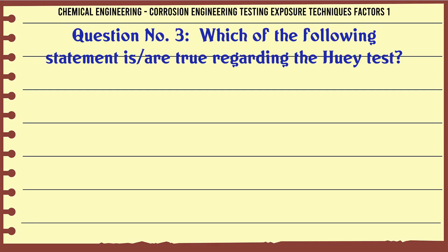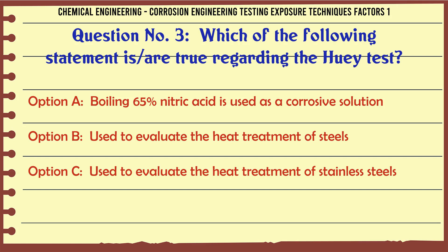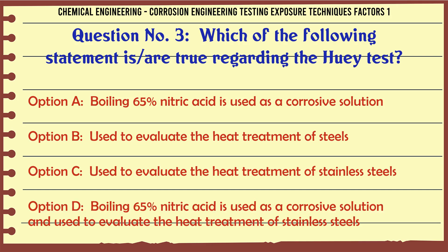Which of the following statements is/are true regarding the Huey test? A. Boiling 65% nitric acid is used as a corrosive solution. B. Used to evaluate the heat treatment of steels. C. Used to evaluate the heat treatment of stainless steels. D. Boiling 65% nitric acid is used as a corrosive solution and used to evaluate the heat treatment of stainless steels.